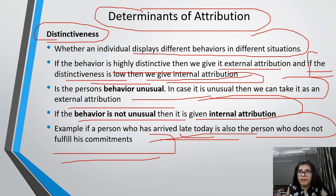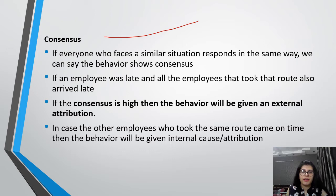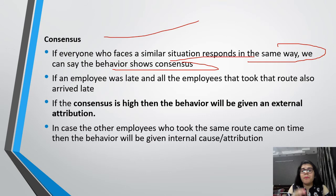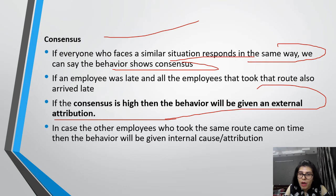The next determinant is consensus. If everyone who faces a similar situation responds in the same way, the behavior shows consensus. For example, if all people coming from the same route are late, then consensus is high and we give it an external attribution — we attribute the behavior to the situation.